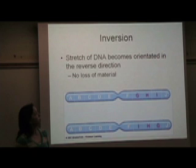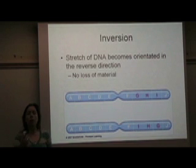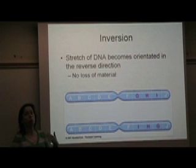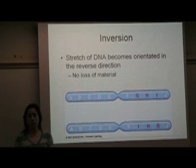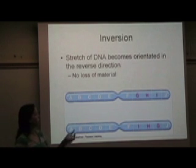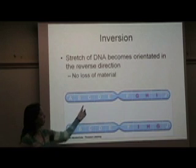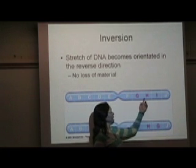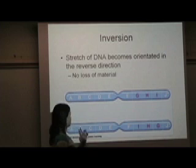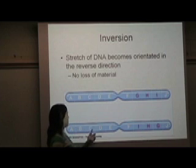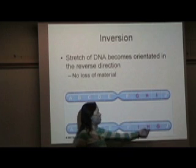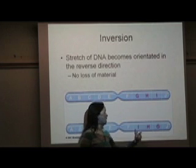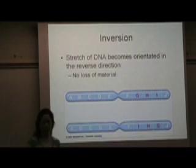You can also have an inversion where one sequence of the DNA — the order of the gene somehow becomes reversed. So there's no loss or gain of material; it's just in the wrong order. Here in our first chromosome we have ABCDEFGHIJ, and after the mutation it's ABCDEFIHG. So the GHI has completely flipped.